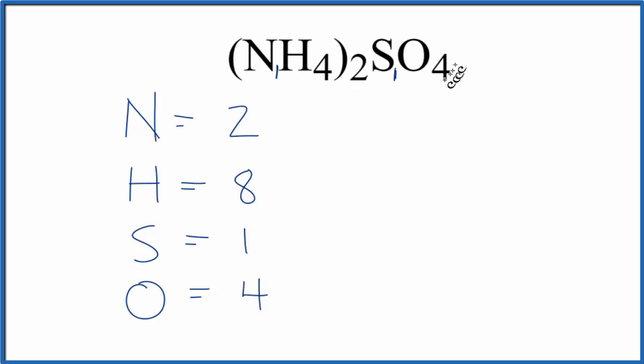So if we wanted to find the total number of atoms in NH42SO4, we'd add these together. 4 plus 1 is 5, plus 8, that's 13, plus 2. 15 total atoms in ammonium sulfate.